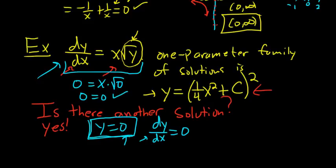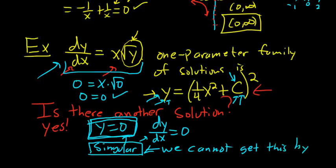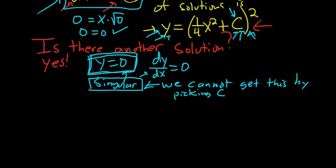This is a solution we cannot get by picking any value of c — there's no c that makes (¼x² + c)² equal to 0 for all x. So this is called a singular solution: any solution you cannot obtain by choosing values of c from the family.